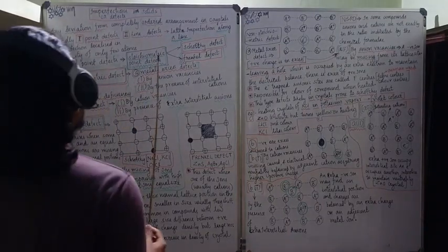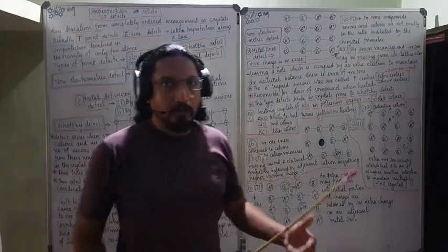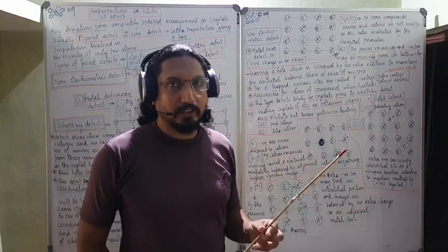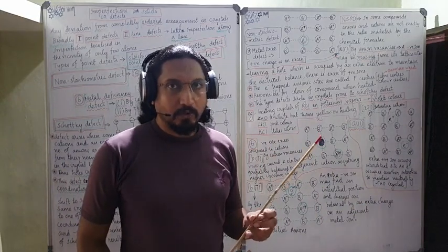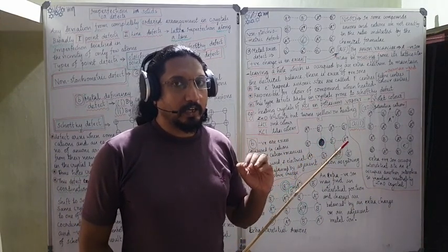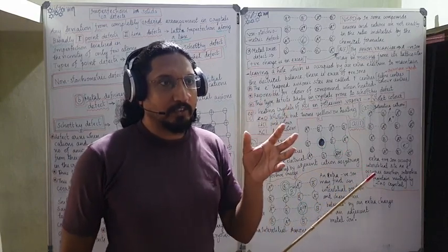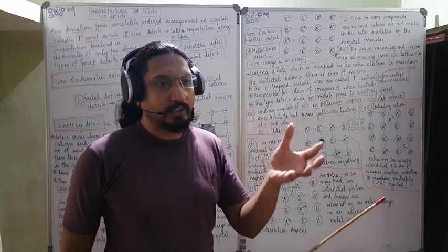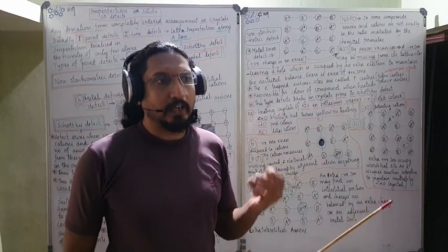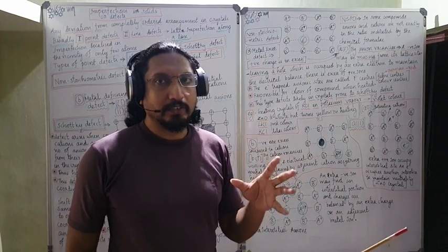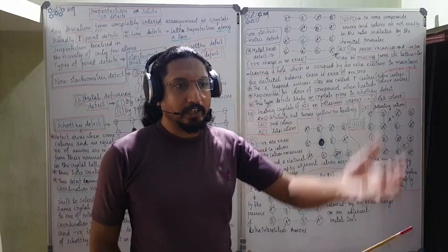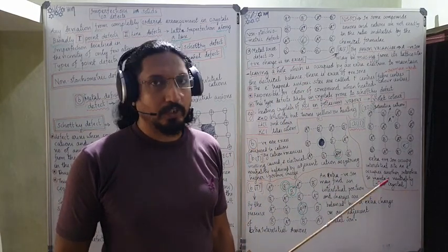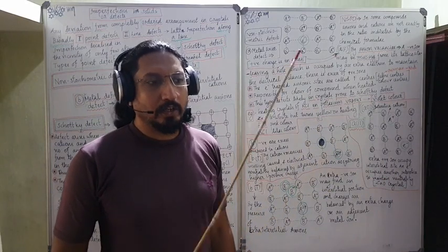Welcome to PCM Guru Bro channel. This is the fourth part of the first chapter of Class 12 / Plus Two higher secondary examination. The first chapter is Solid State. Earlier lectures covered amorphous and crystalline solids, face-centered and body-centered cubic lattices, density of a unit cell, and an introduction to all shapes. This fourth part and all lectures are very important for board and competitive examinations.